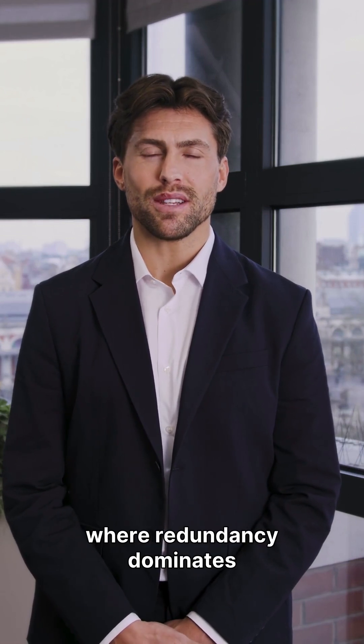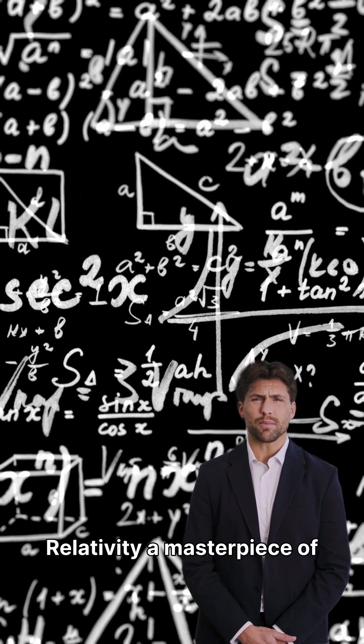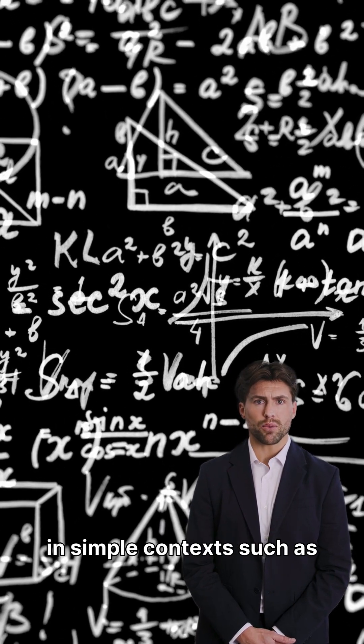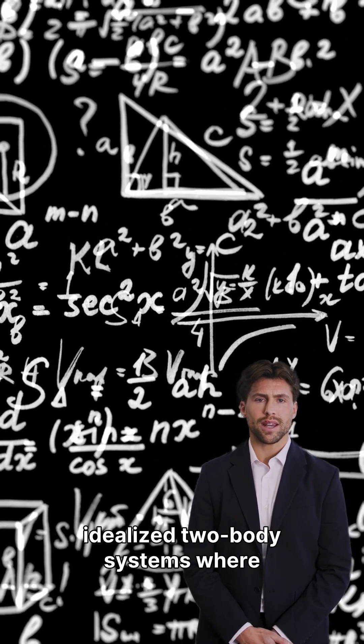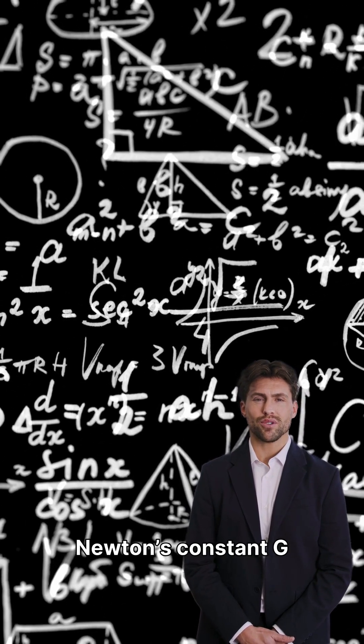It only works where redundancy dominates. That is why general relativity, a masterpiece of mathematical elegance, performs beautifully in simple contexts, such as idealized two-body systems where it was calibrated through Newton's constant, G.